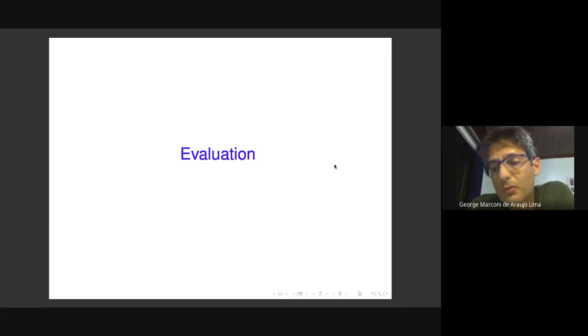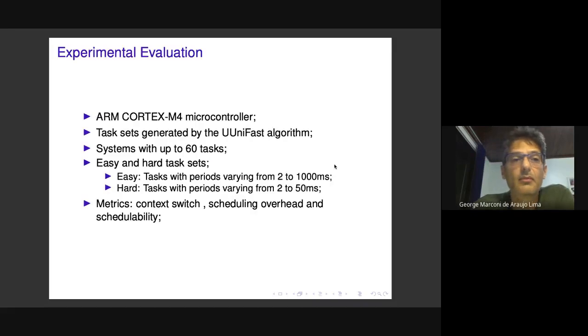Now we move to evaluating these implementations via experiments conducted on the Cortex-M4 microcontroller. Task sets were randomly generated using UUniFast, which ensures no bias in generating system tasks. We consider systems with up to 60 tasks.